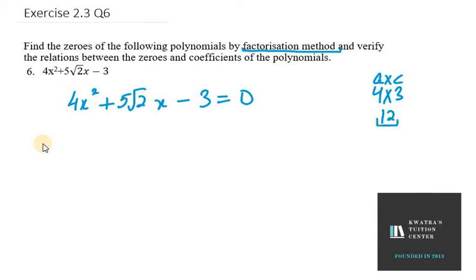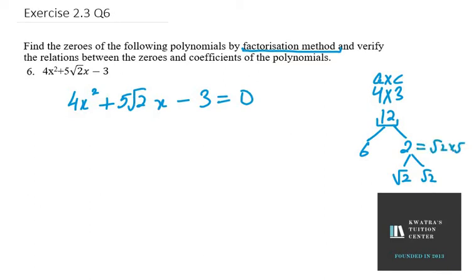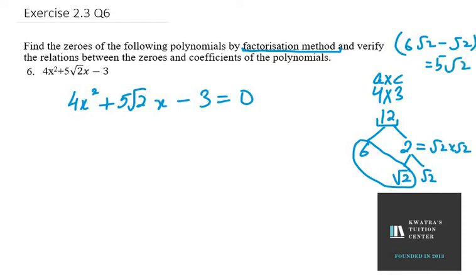Now we need to split 12 such that they make 5 under root 2. We know that 12 can be written as 6 and 2. Now the middle term is in terms of under root 2, so we will write 2 as under root 2 into under root 2, which makes it easy to form a pair. That pair will be 6 under root 2 minus under root 2, which makes 5 under root 2.